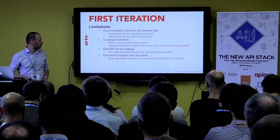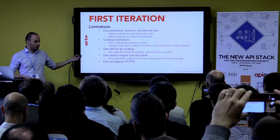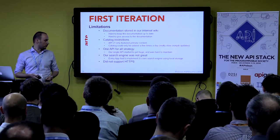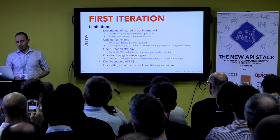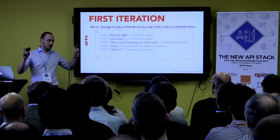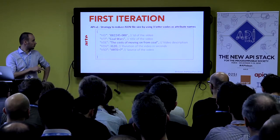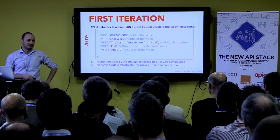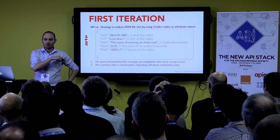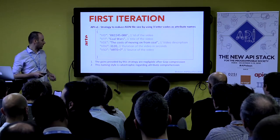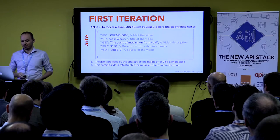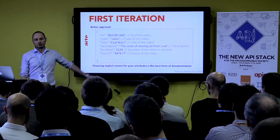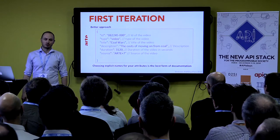The development process was pretty slow. We had some other improvements to make, like security — because for internal use only, we were using HTTP. We also used a strategy to reduce the file size of JSON by making attribute names very short, using three-letter codes. This was, as you can imagine, really bad. Using JSON compression, there's just no point doing it. For the understanding of the API, it was a nightmare. A much better approach: work on good naming — it's just the best form of documentation.